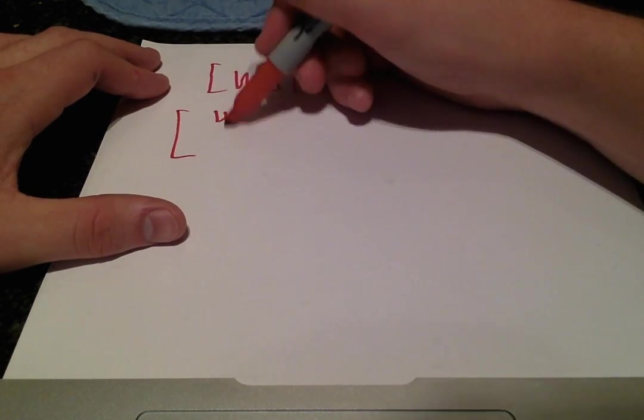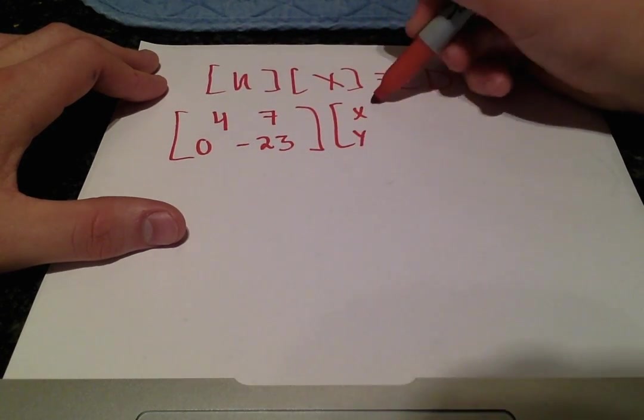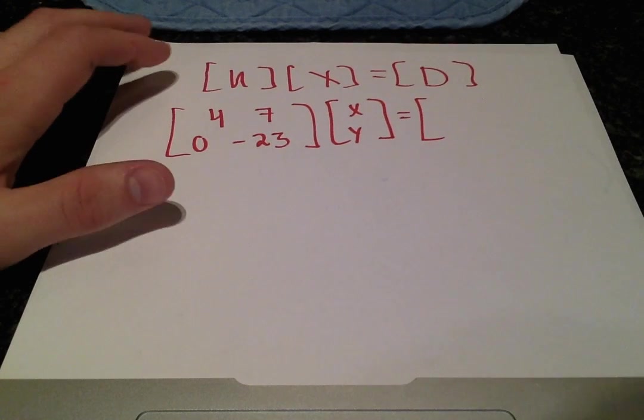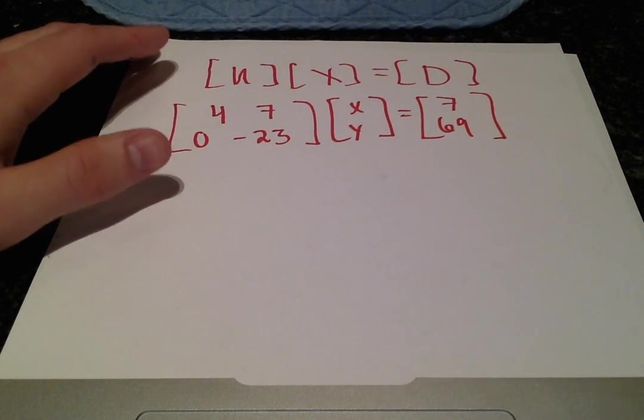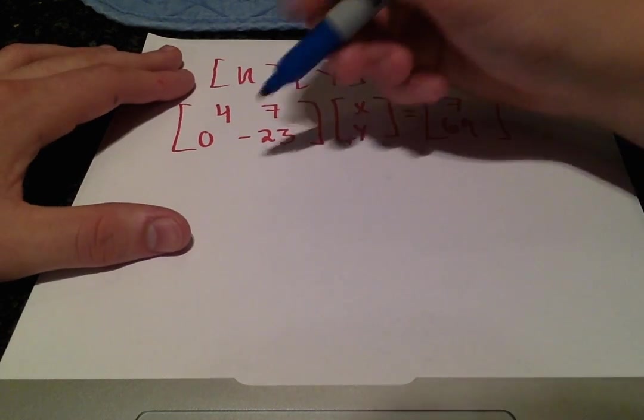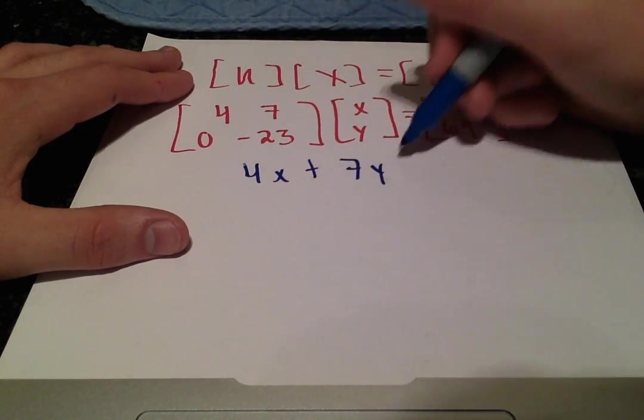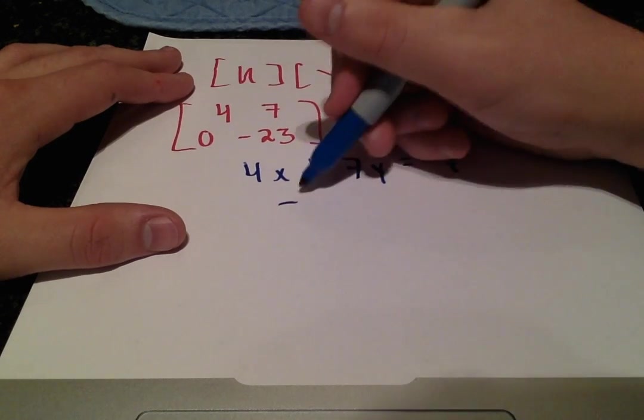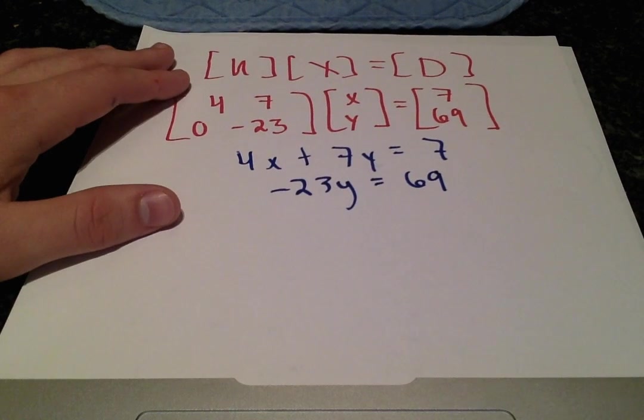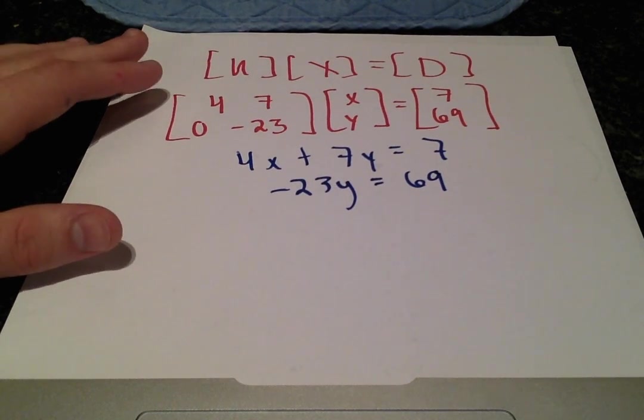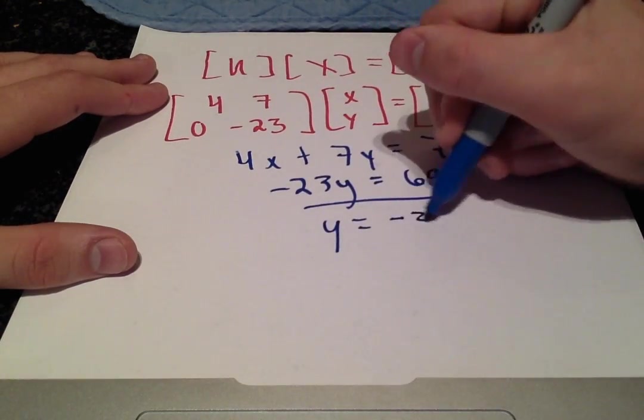The upper matrix is 4, 7, 0, negative 23. X is what we want to solve for, X and Y. The D vector is what we just solved for, 7, 69. Multiplying this out, we get 4X plus 7Y is equal to 7, and negative 23Y is equal to 69. Right away you can see what the value for Y is. That's just negative 3.